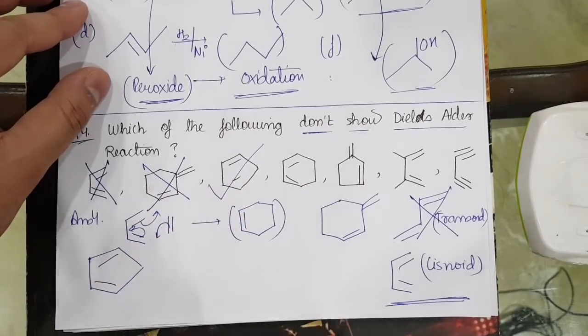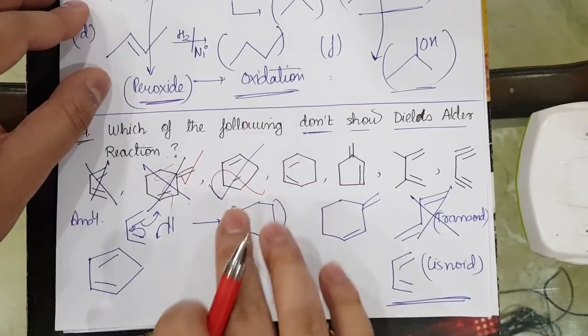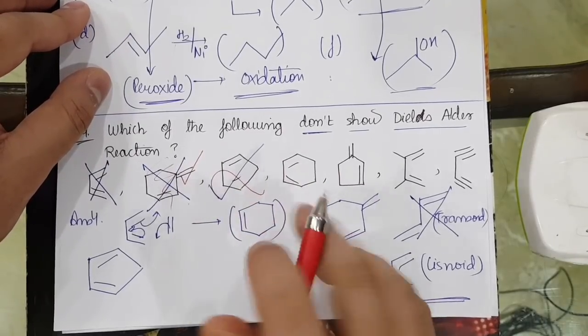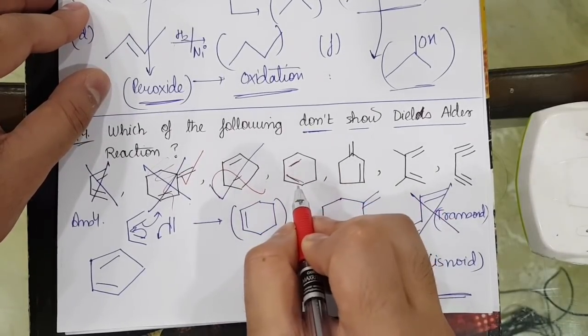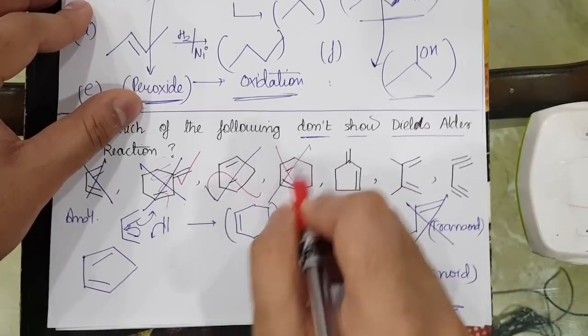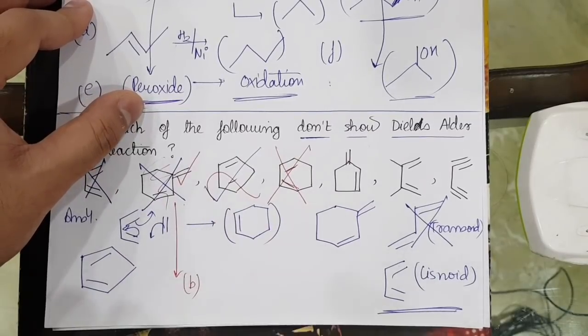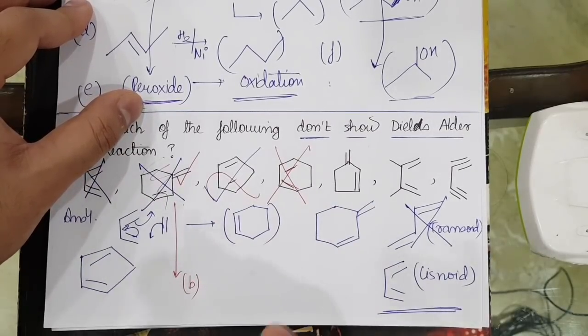Is this a cisoid? Yes, this is a cisoid, and hence this will show the Diels-Alder reaction according to the given question. This is a correct option. This is a correct option, and this is an incorrect option because it will give. Will this give? Yes. Is this transoid? Yes. Is this cisoid? Yes. It will give the reaction. So according to the question, this is not required.